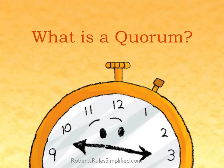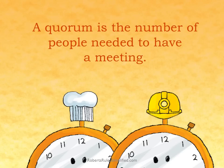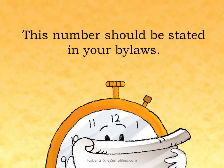What is a quorum? A quorum is Latin, which means 'of them.' In other words, a quorum is the number of members needed to have a meeting. This number should be stated in your bylaws.